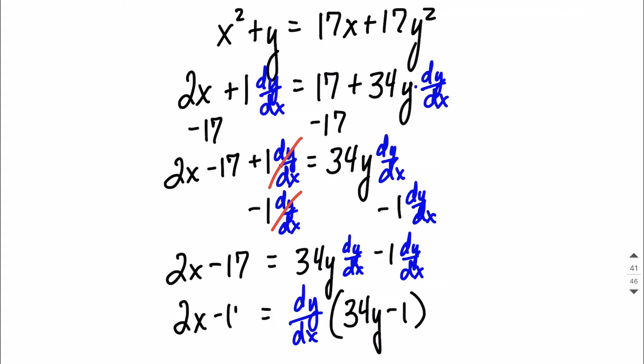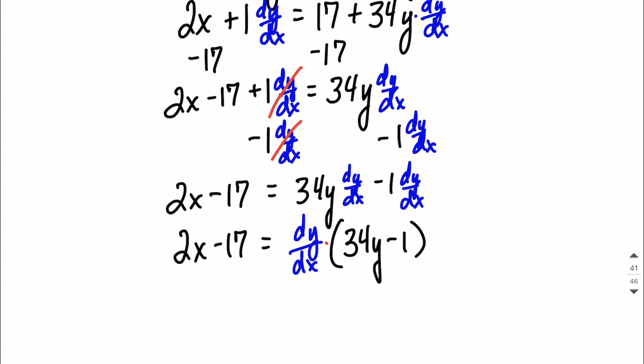If we do so, we're going to be left with 34y minus 1 inside a set of parentheses. And 2x minus 17 over on the left-hand side. So what we've created is a situation where we have dy dx multiplied by that big set of parentheses on the right-hand side. So to counteract this multiplication, we simply have to divide both sides by 34y minus 1 on each side. Same factor in numerator and denominator. It's going to make a 1. That'll isolate the dy dx on the right-hand side all by itself.